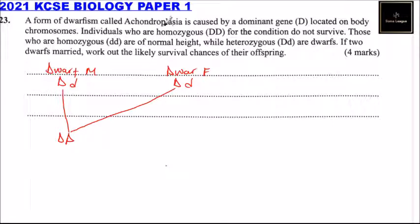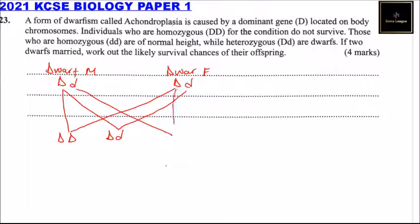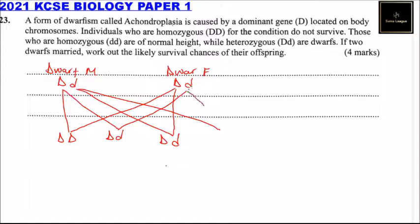The combinations are: D and D giving us double capital D (DD); capital D and small d; capital D and small d again; and finally small d and small d. These are the four possible offspring combinations from the Punnett square.